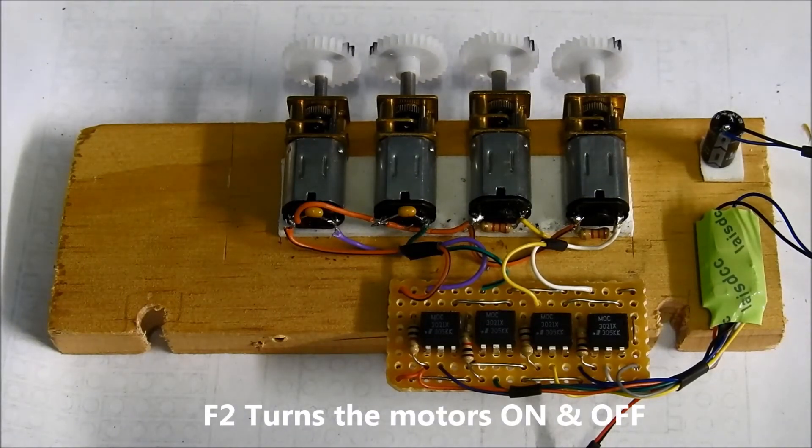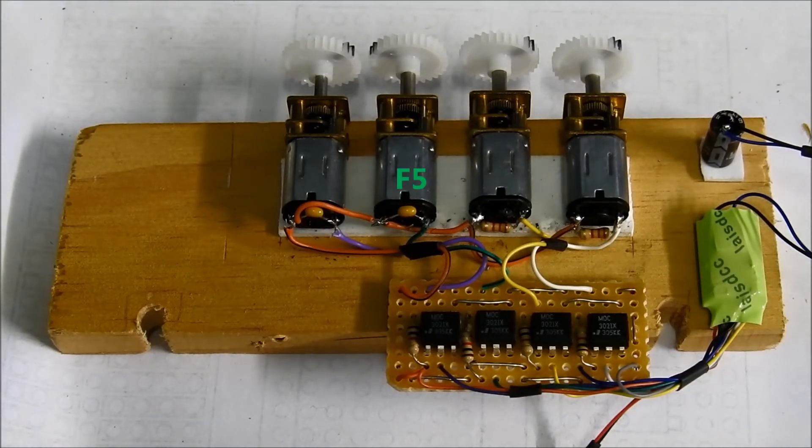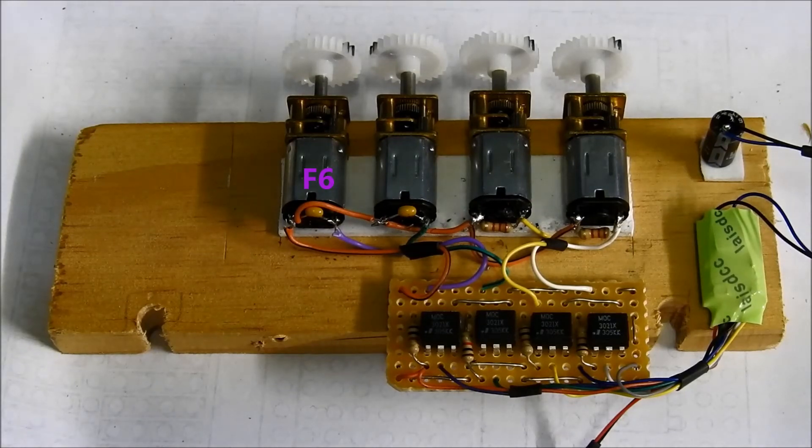Function three operates the white wire and the right hand motor. Function four operates the yellow wire and the second motor from the right. Function five is the green wire and the third motor from the right. Function six, which is the violet wire, is the motor on the left.